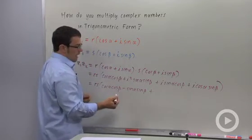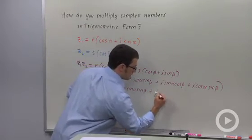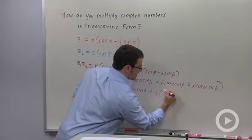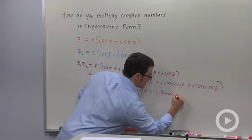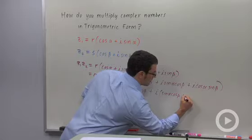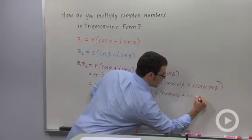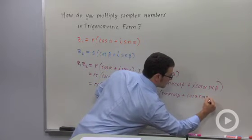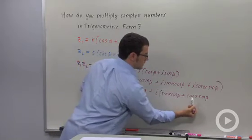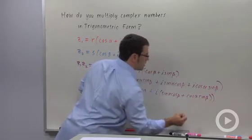And then let me pull the I out. Pull the I out and I get sine alpha cosine beta plus cosine alpha sine beta.